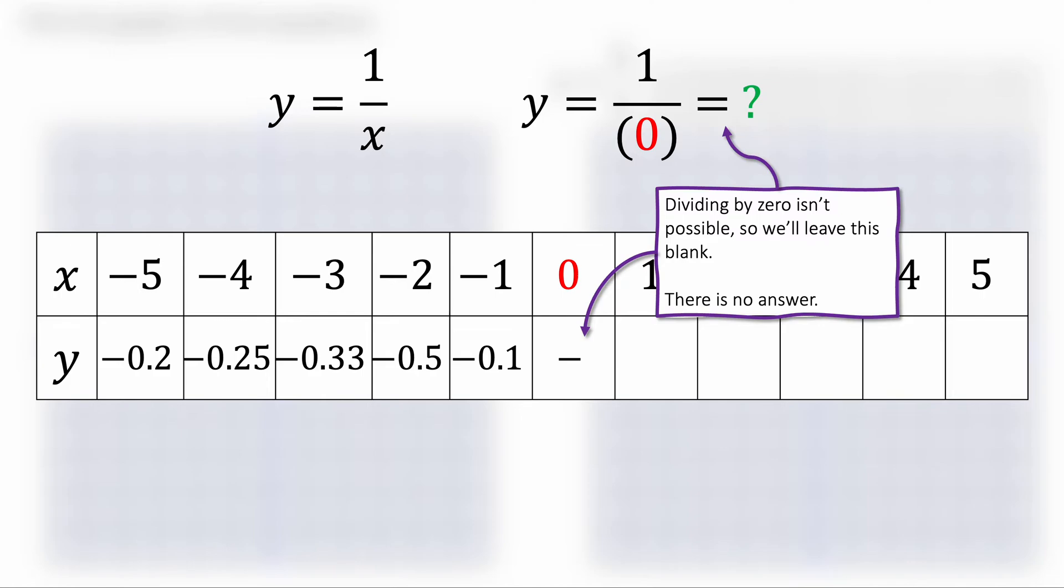When I get to 0, I type 1 over 0 into my calculator and that gives me a maths error on the calculator. There is no answer to this because you cannot divide by 0. It doesn't make mathematical sense. So we're just going to leave that blank because there is no answer to this 1 over 0.